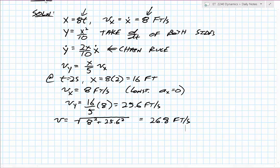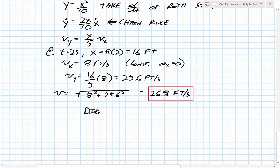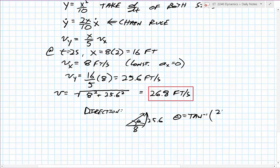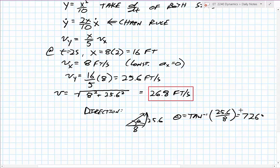For direction, using trigonometry with the x-component of 8 and y-component of 25.6, the angle theta from the horizontal is the inverse tangent of 25.6 over 8, which is approximately 72.6 degrees. So the velocity is 26.8 feet per second at 72.6 degrees from horizontal.